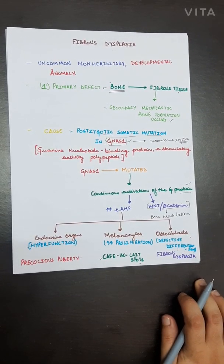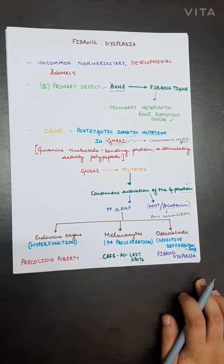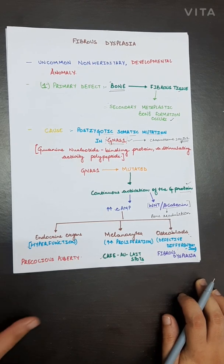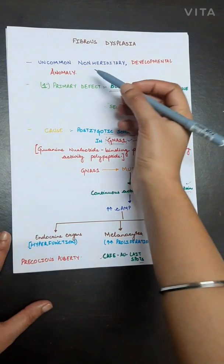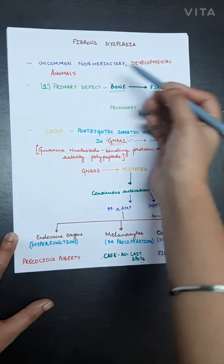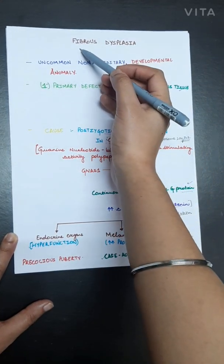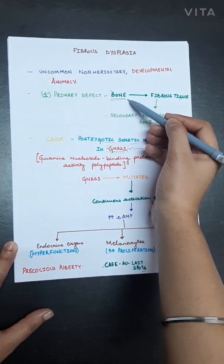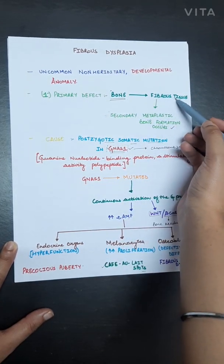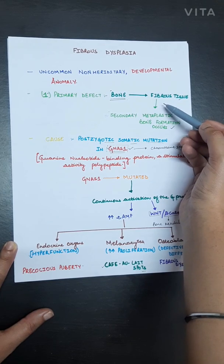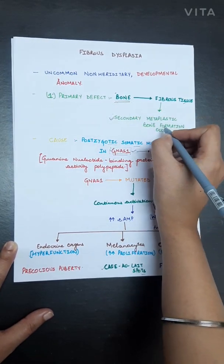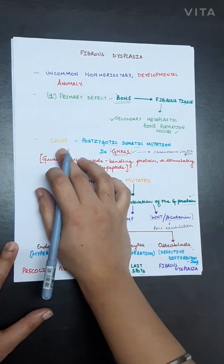Today we are going to discuss fibrous dysplasia, a bone and joint disease. It is basically an uncommon non-hereditary developmental anomaly. As the name suggests, the bone is replaced by fibrous tissue in this disease, and therefore secondary metaplastic bone formation occurs.